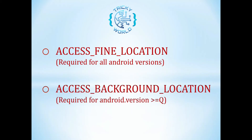First, I am going to explain the location permissions required for an application to get the device location. The first permission is ACCESS_FINE_LOCATION. This permission is required for all Android versions. For devices having Android version below 10, this single permission is sufficient to get the device location in both cases — while using the application as well as while not using or interacting with the application.